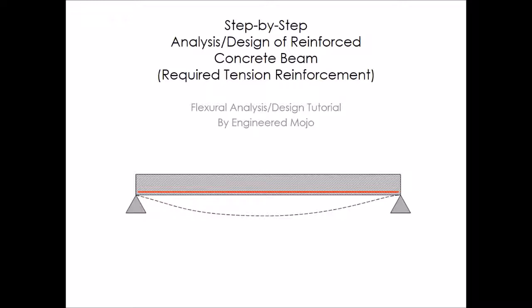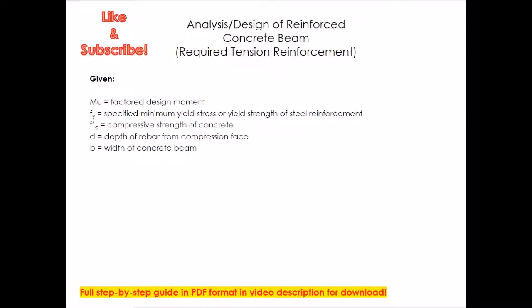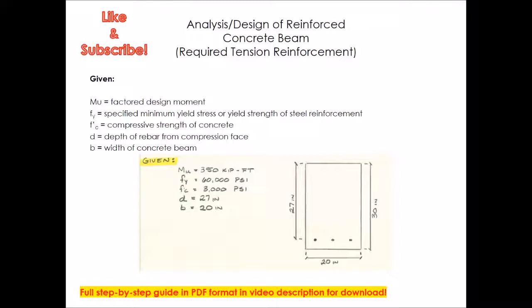To start off, we have a few givens: a factored design moment Mu, the specified yield stress for steel fy, compressive strength for concrete f'c, the depth of the rebar from the compression face d, and the width of the concrete beam b. I've chosen a 30-inch deep beam, 20 inches wide, rebar set at 27 inches from the top (compression face). The design factored moment is 350 kip-feet, fy = 60,000 psi, and f'c = 3,000 psi.